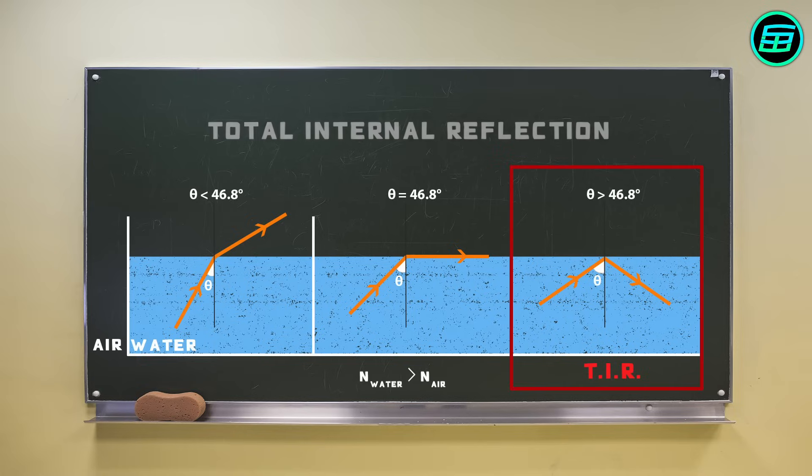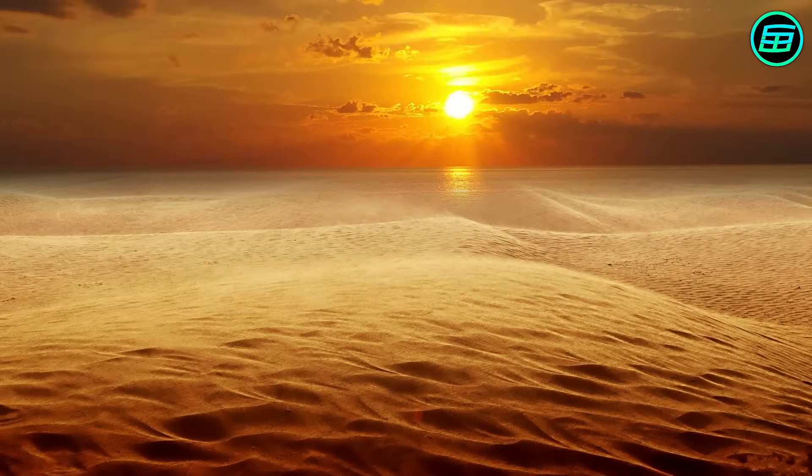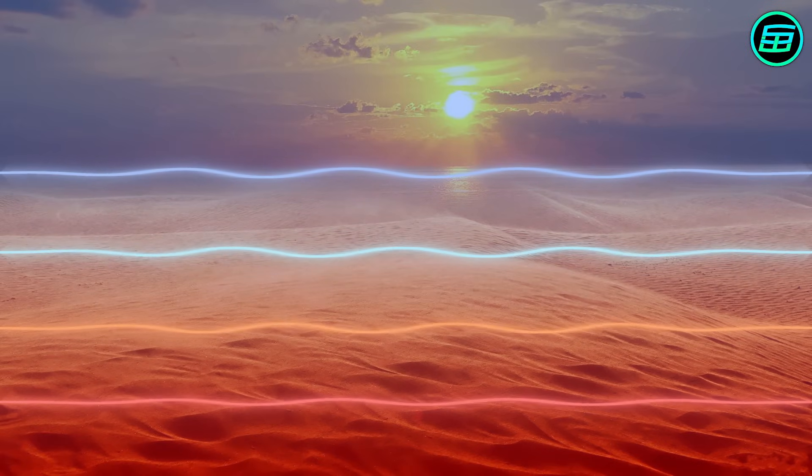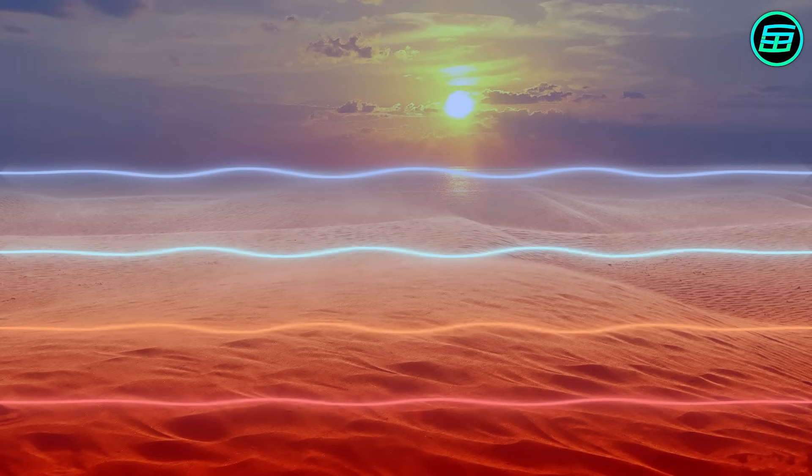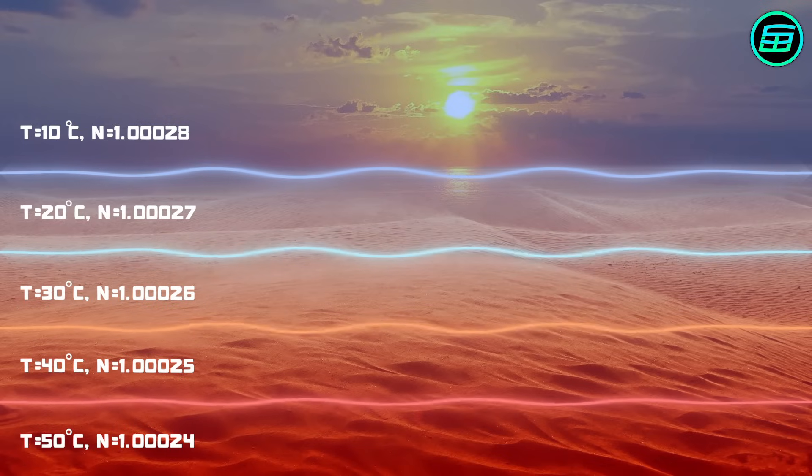Now we have all the information we need to understand how a mirage forms. In summer, the hottest layer of air is the one closest to the ground. As the hot air rises, it cools with the result that there are layers of air at different temperatures with different refractive indices.